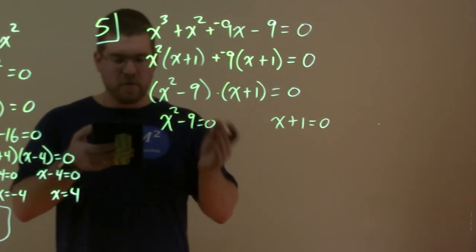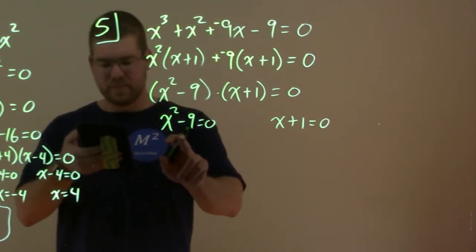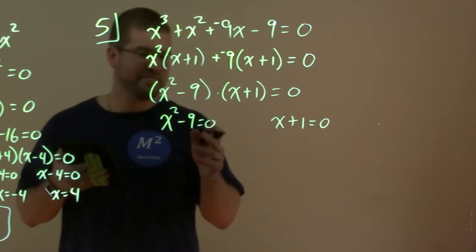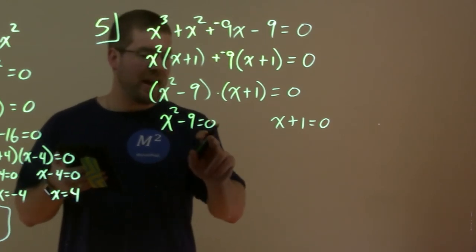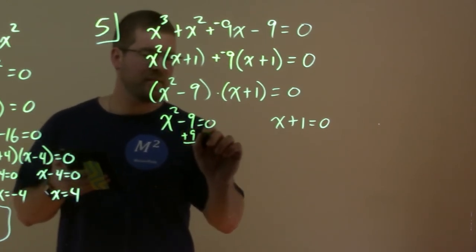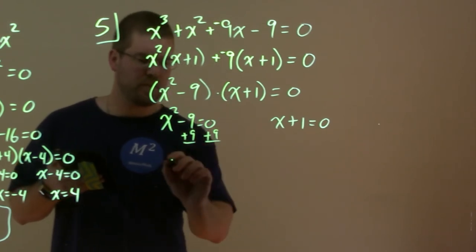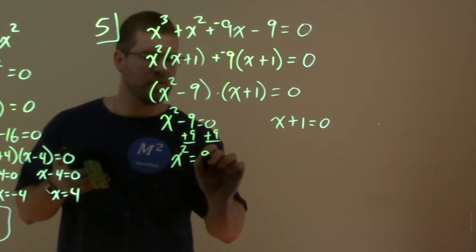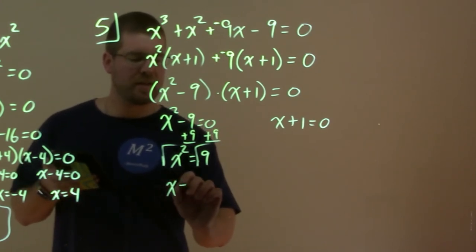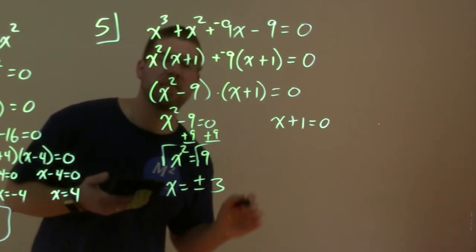So, a few ways to go about this, okay? You could add a 9 to both sides. That's the way I would do it. Some people would factor more there, but I'm just going to do it this way. So, x^2 = 9, square root both sides of 9, and x equals plus or minus 3.